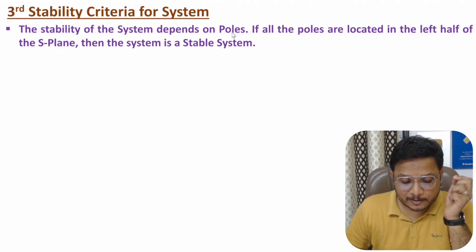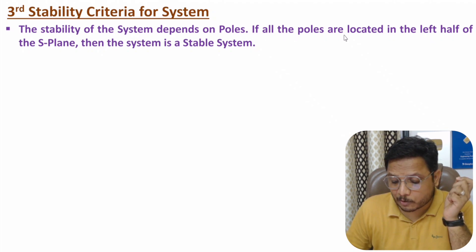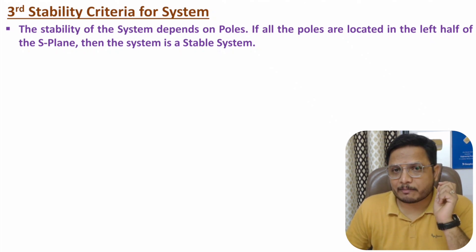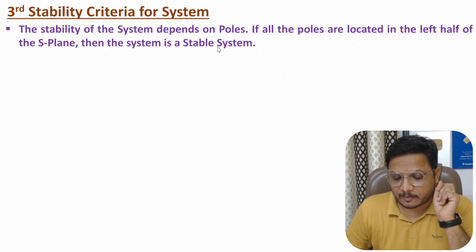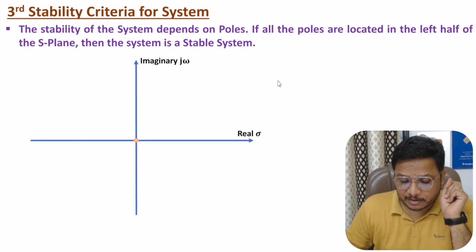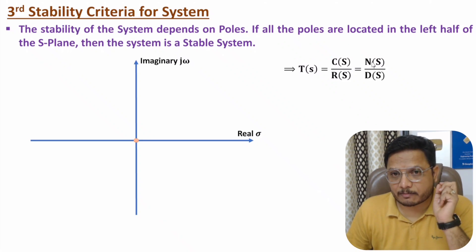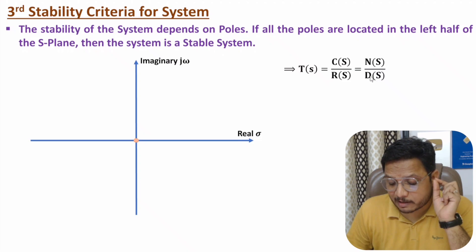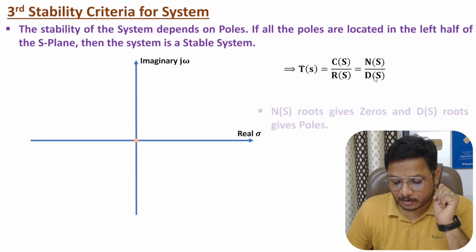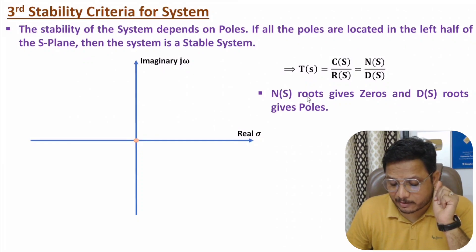Now the third stability criteria is based on the location of poles. The stability of the system depends on poles — if all the poles are located in the left half of the S-plane, then the system is stable. To understand this, consider a transfer function, which is the ratio of output to input. The transfer function has a numerator polynomial and a denominator polynomial. The roots of the numerator polynomial give the zeros of the system, and the roots of the denominator polynomial give the poles of the system.